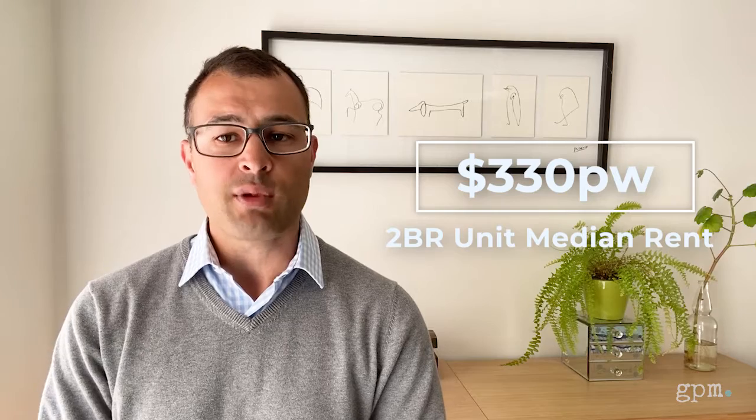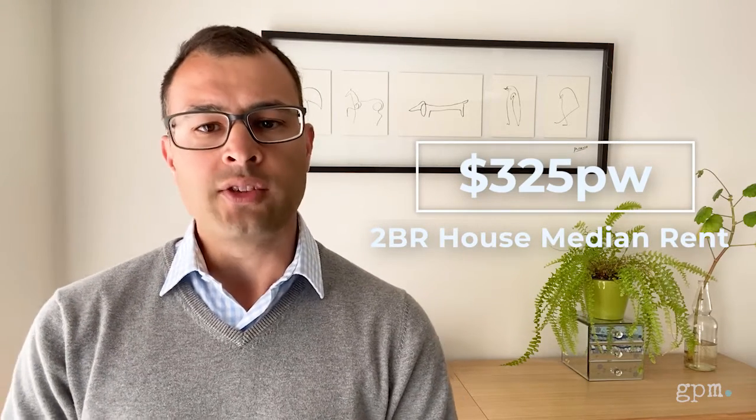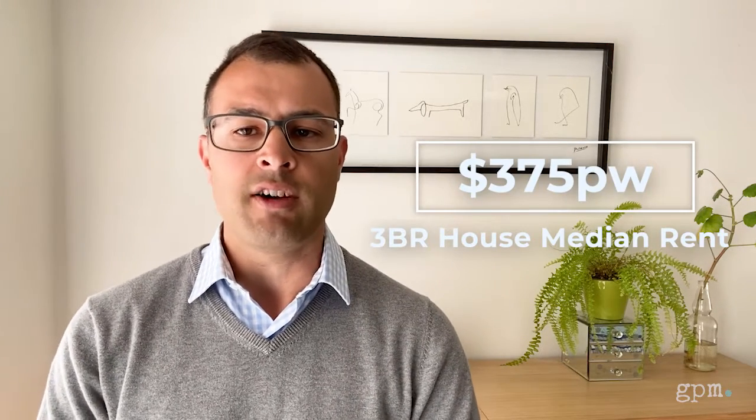The October data shows that two-bedroom units have reached a new high with a median rent of $330 per week, which is a $10 increase from the consistency of the previous five months. Two-bedroom houses are relatively steady with a median rent of $325 a week, while the same measure for three-bedroom houses is up $5 a week on the previous four months to a median rent of $375 per week.